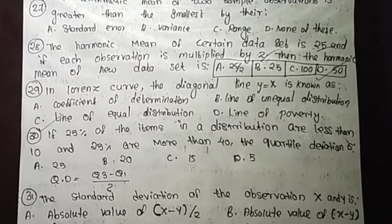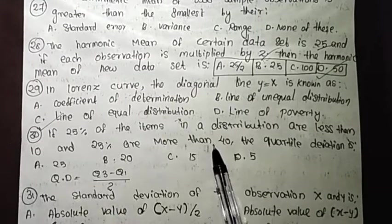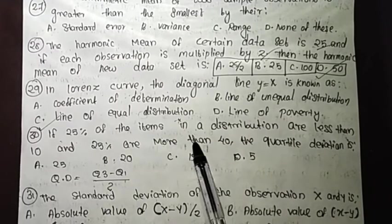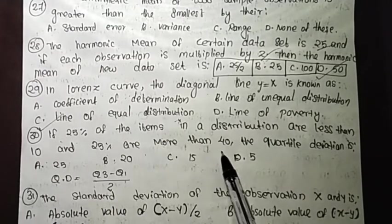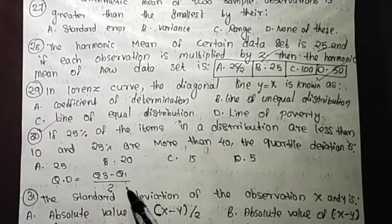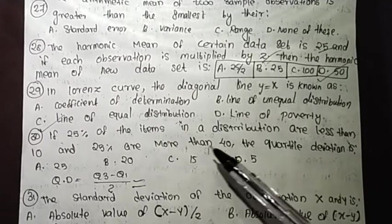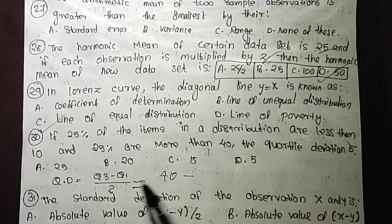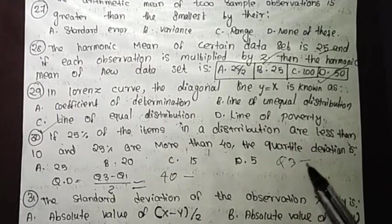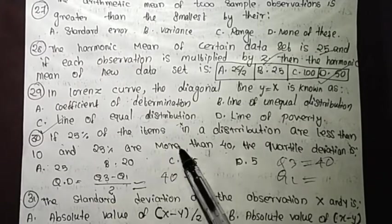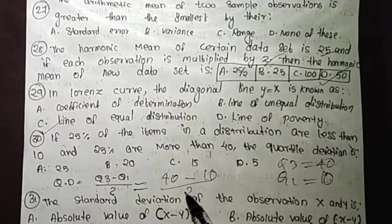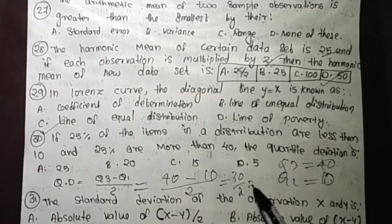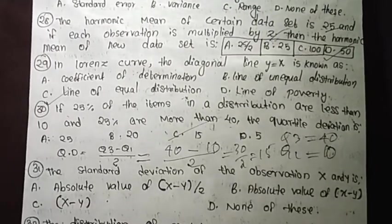If 25% of items in a distribution are less than 10 and 25% are more than 40, the quartile deviation is Q3 minus Q1 by 2. Q3 is 40 and Q1 is 10, so the quartile deviation is 30 by 2, which is 15. Option C is the answer.